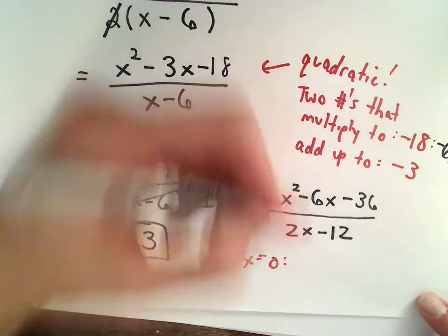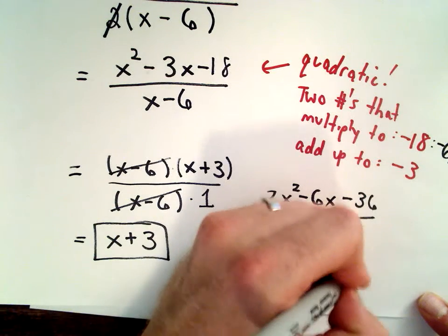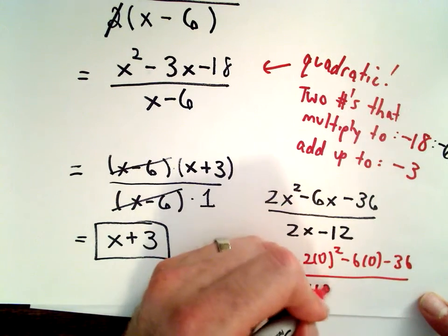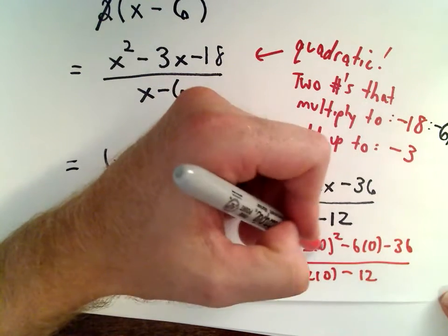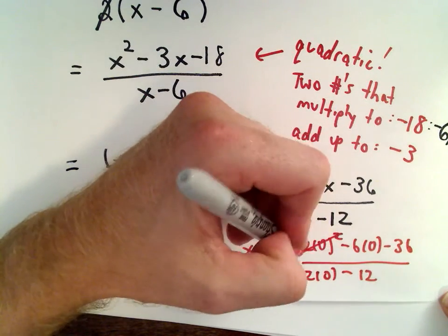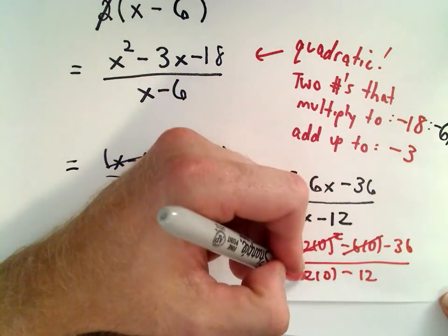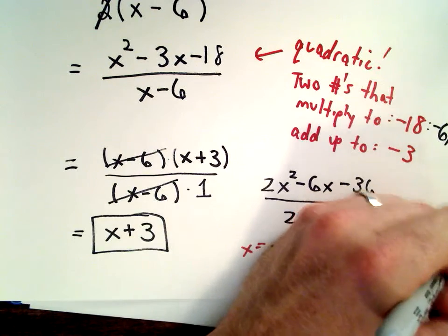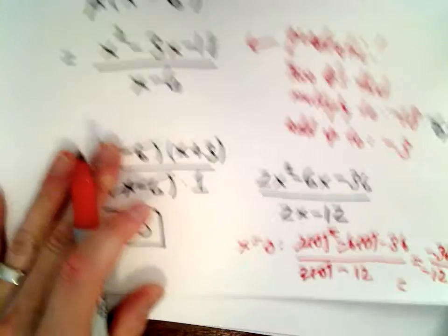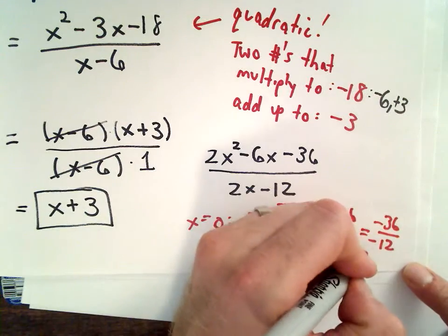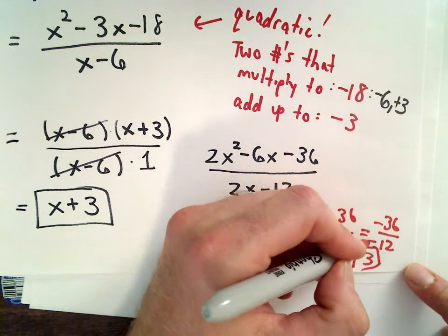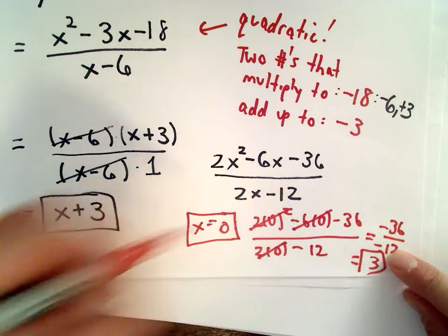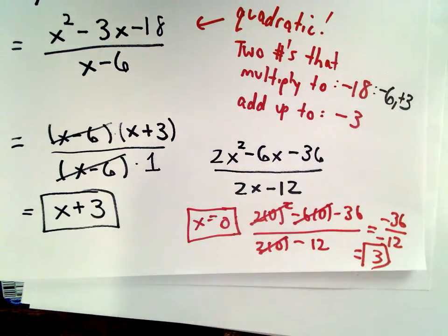You would have 2 times 0 squared minus 6 times 0 minus 36 over 2 times 0 minus 12. Well, 0 squared is 0, multiplied by 2 is 0, 6 times 0 is 0. Again in the denominator, 2 times 0 is 0, so you're left with negative 36 over negative 12. Negative 36 over negative 12 is going to simplify to positive 3. A negative over a negative is a positive. Again, you could put that in a calculator. So if I substitute in x equals 0, it says I get the number positive 3 out.